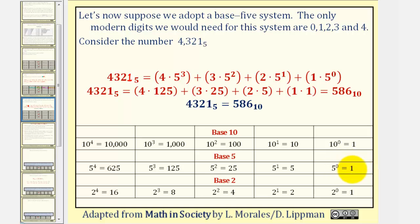Now if we increase the exponent by 1, 5 to the first would give us the 5's place value. 5 to the second would give us the 25's place value. 5 to the third would give us the 125's place value, and so on.